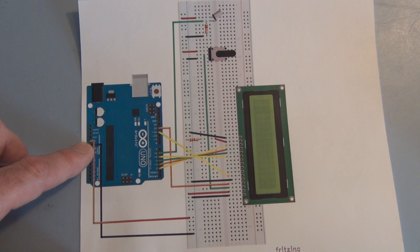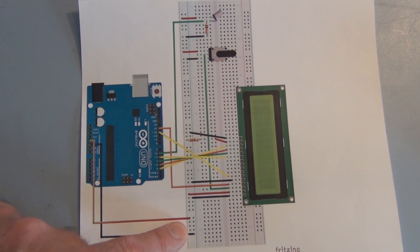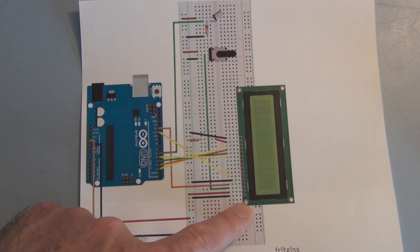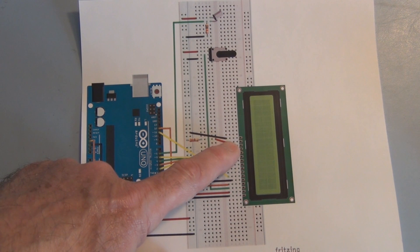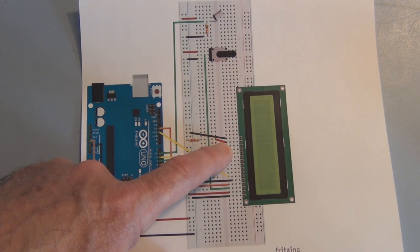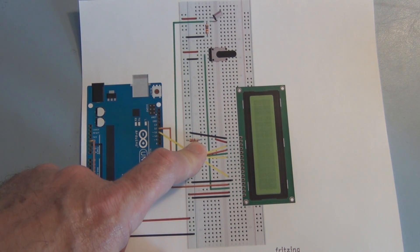So first we have the supply voltage, the plus 5 volts, and the ground going over to the breadboard. Here we have pins 1 through 16 on the LCD. We ground, this is the ground for the backlight. And we have plus 5 volts on pin 15 for the backlight through a 220 ohm current limiting resistor.